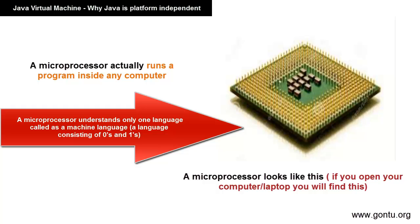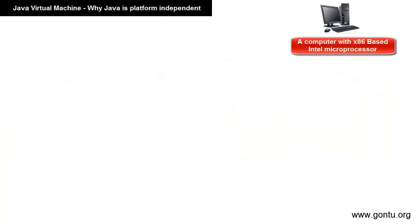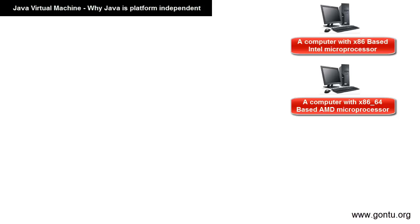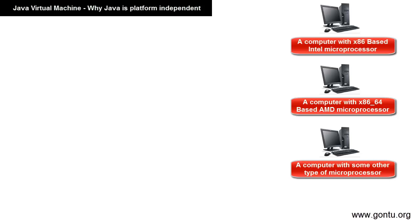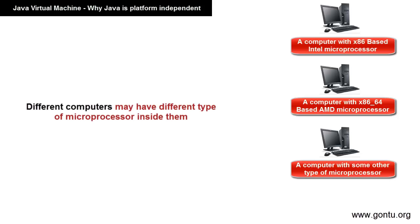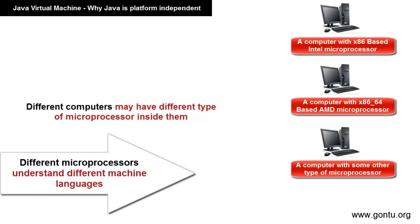People around the world use different types of microprocessors in their computers. For example, I use a computer with an X86-based Intel microprocessor developed by Intel, and in your computer you may be using some other type — for example, an X86-64 based AMD microprocessor developed by AMD company. Different computers may have different types of microprocessors inside them, and a big point to notice: all different types of microprocessors understand different machine languages. Think of it as people in different countries speaking different languages — different microprocessors understand and communicate in different machine languages.